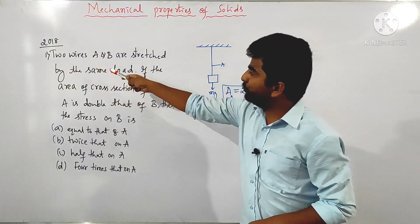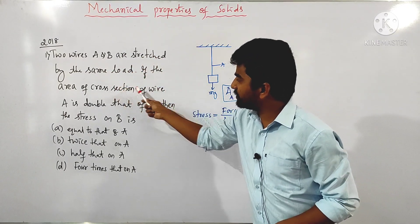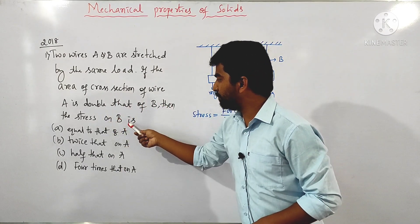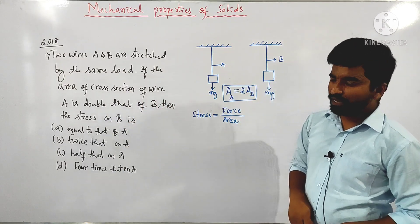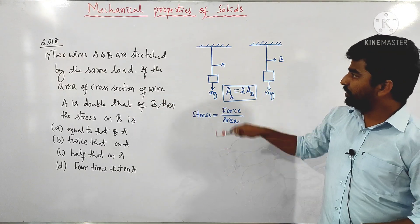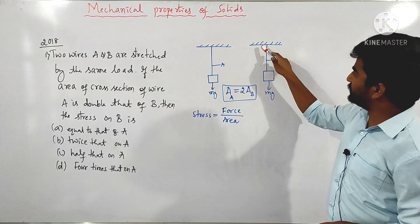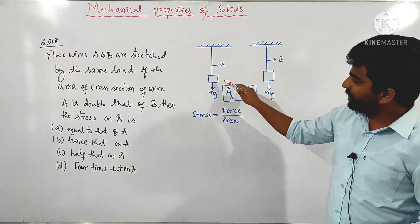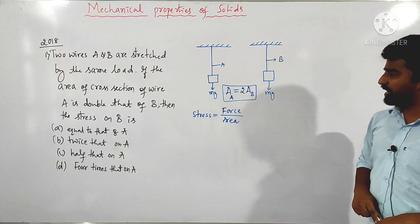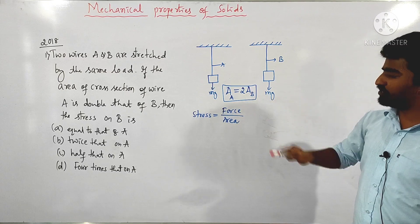We move on to the next question, asked in 2018. Two wires A and B are stretched by the same load. If the area of cross section of wire A is double that of wire B, then what is the stress on wire B? Wire A is connected to a rigid support, and so is wire B — both have the same load Mg. They are given that the area of cross section of wire A is equal to two times the area of cross section of wire B.